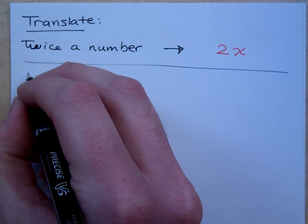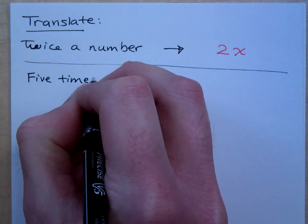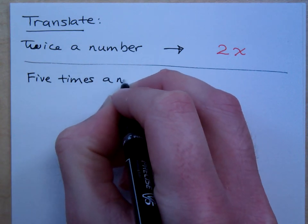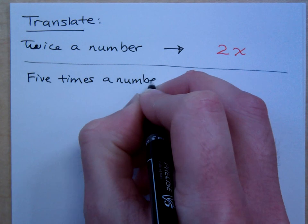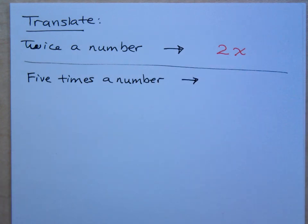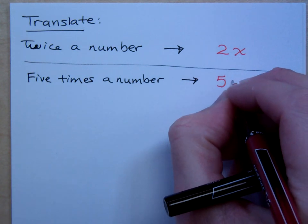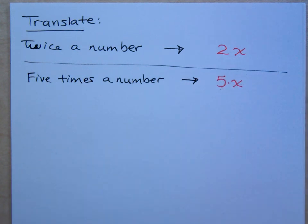Just like if I were to say five times a number. How do we translate five times a number? It's just 5x because you're doing five times a number, and that multiplication in between them would just give you 5x.